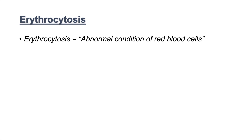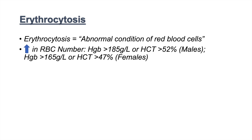This lesson covers erythrocytosis — what it is and its causes. Erythrocyte means red blood cell, and -osis means abnormal condition, so it literally means an abnormal condition of red blood cells. Specifically, it refers to an increase in red blood cell number: hemoglobin greater than 185 g/L or hematocrit greater than 52% in males, and hemoglobin greater than 165 g/L or hematocrit greater than 47% in females.